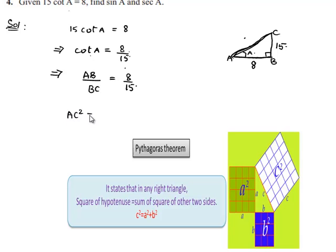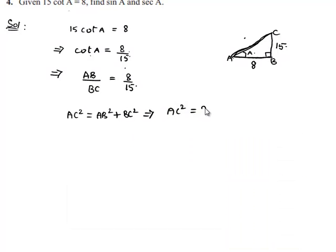Here we can write AC square is equal to AB square plus BC square. That implies AC square is equal to 8 square plus 15 square, which is equal to 64 plus 225, that is equal to 289. So here we get the value of AC as square root of 289 which is equal to 17.